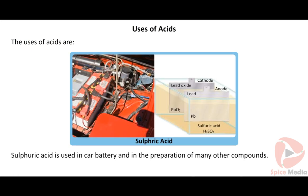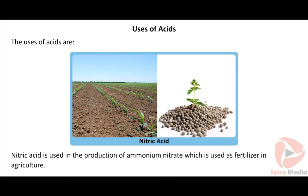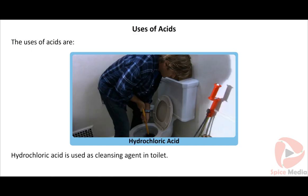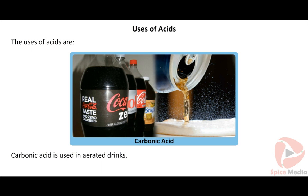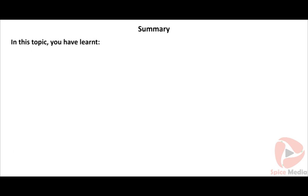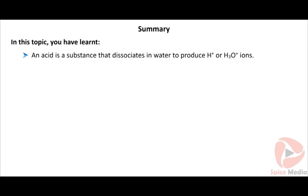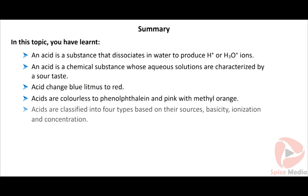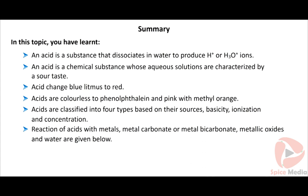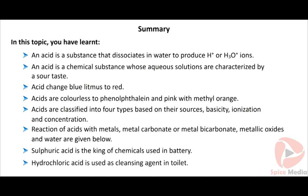Uses of acids: Sulphuric acid is used in car batteries and in the preparation of many other compounds. Nitric acid is used in the production of ammonium nitrate, which is used as a fertilizer in agriculture. Hydrochloric acid is used as a cleansing agent in toilets. Tartaric acid is used as a constituent of baking powder. Salt of benzoic acid is used in food preservation. Carbonic acid is used in aerated drinks. Summary: An acid is a substance that dissociates in water to produce H⁺ or H₃O⁺ ions, characterized by a sour taste, changing blue litmus to red, colorless to phenolphthalein, and pink with methyl orange. Acids are classified into 4 types based on sources, basicity, ionization, and concentration. Sulphuric acid is the king of chemicals, used in batteries; hydrochloric acid is used as a cleansing agent.